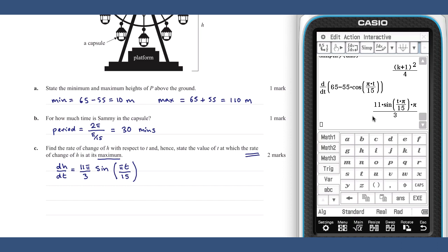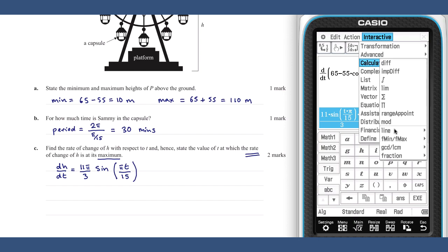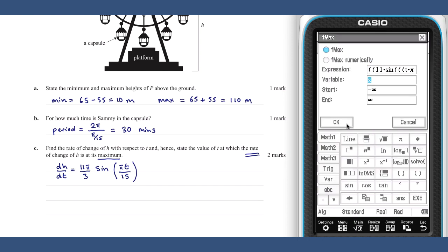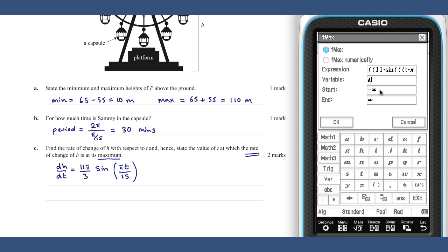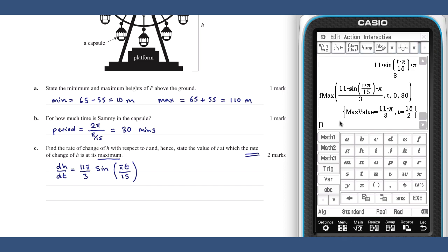In other words, we need to determine the maximum value of the rate function. Note, this is not the same as calculating the maximum value of the height function, which we found previously in part a. I'm going to do this using the expression generated and the fmax command on my class pad. With functions such as these, it is particularly important to set a start and end value. Given the period of the function is 30 minutes, an appropriate start and end value will be 0 to 30. This gives the time at which the rate is maximised as t equals 15 over 2.